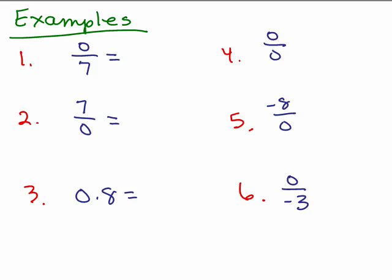All right, let's do six quick problems. 0 divided by 7, what's that going to equal? Well, when the 0 is in the numerator, as long as there's not a 0 in the denominator, the answer is 0. And you could check by saying 0 times 7 equals 0 up here, right? The number over here times the denominator has to equal the numerator.